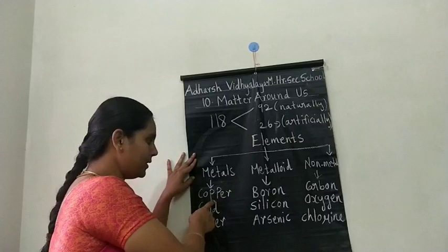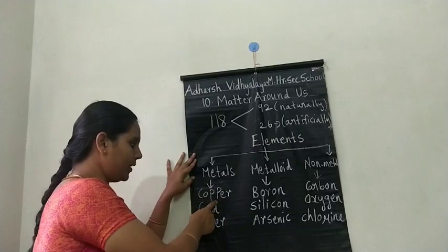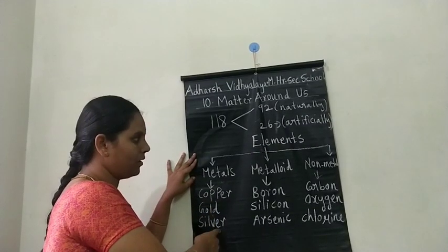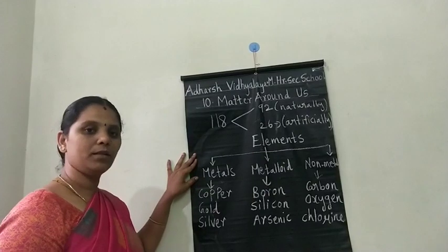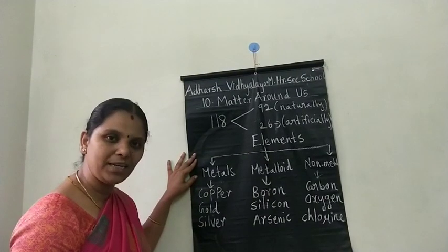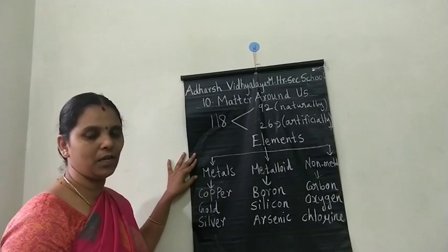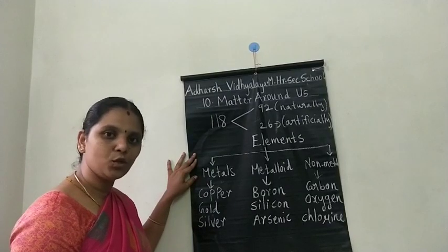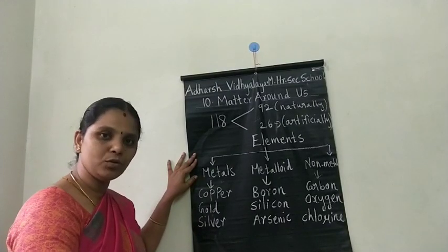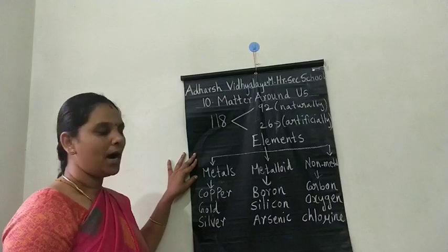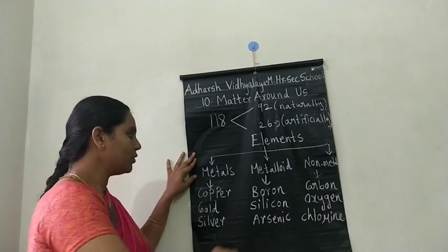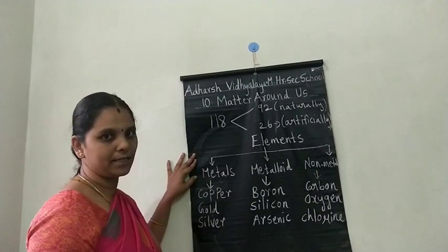Examples of metals are copper, gold, and silver. Metals are good conductors of heat and electricity. Metals can be converted into wire form and sheet form, and they have high melting and boiling points.